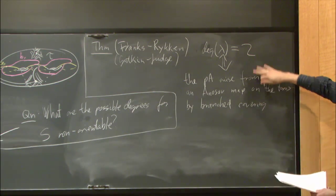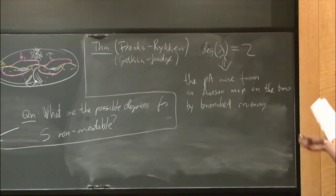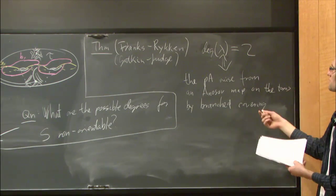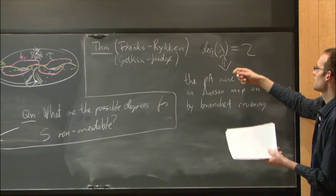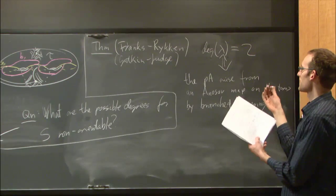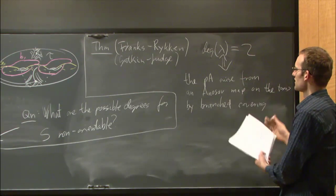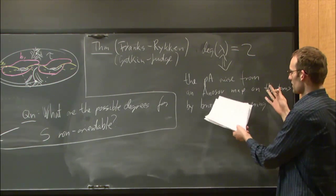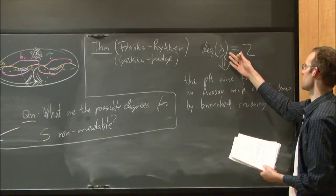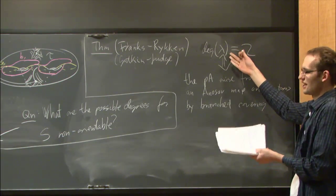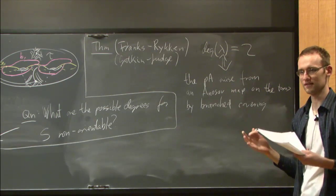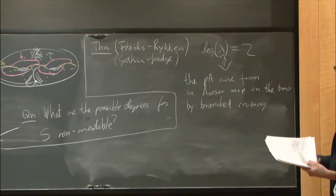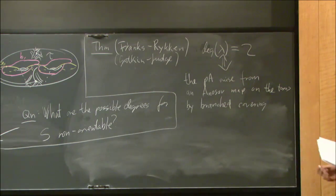So here is some algebraic complexity of the pseudo-Anosov map, connected with some geometric complexity. It would be interesting to say something about higher degrees — like, what can we say about the geometric complexity of a pseudo-Anosov map if the degree is not maximal, say degree 4? In what sense is the pseudo-Anosov map simple in that case?